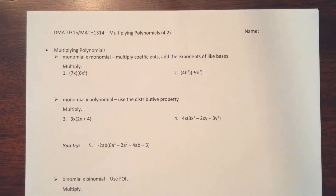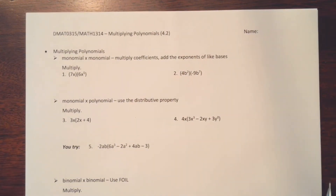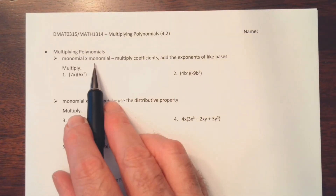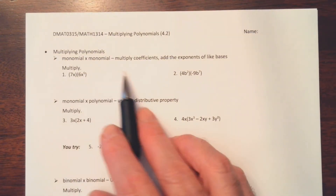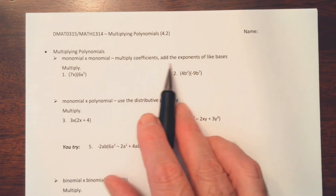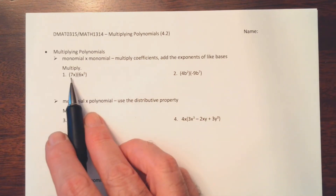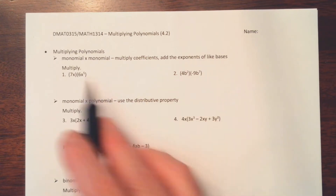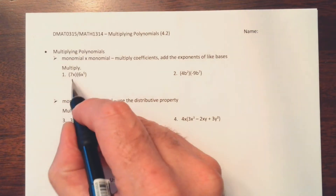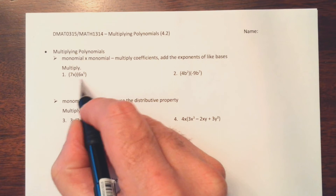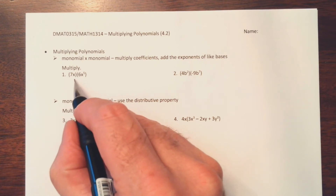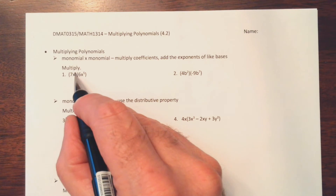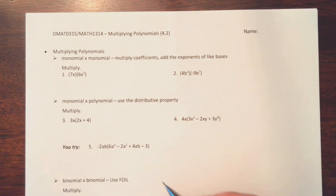In this video we're going to look at how we multiply polynomials. We're going to begin with a monomial times a monomial. We're going to multiply the coefficients — that's the numbers out front, the 7 and the 6 here — and we're going to add the exponents of like bases. Notice x and x to the 5th both have a base of x, and we add the exponents: 1 plus 5, we get x to the 6th.